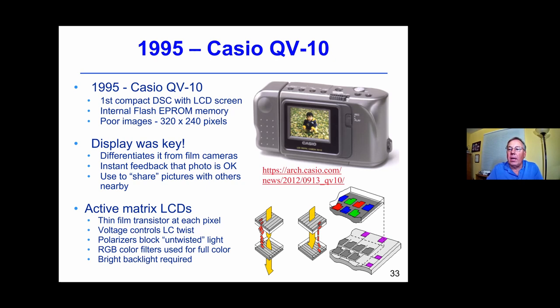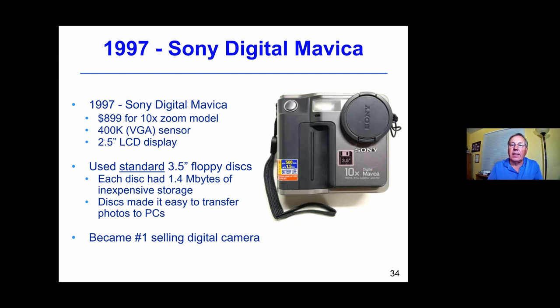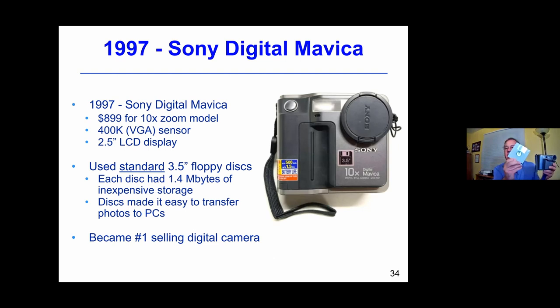The Casio had internal memory and it was very hard to get images out of the computer over the RS-232 interface. Two years later Sony came out with what they called the digital Mavica camera. It stored images on a standard floppy disk — everybody knew how to take one of these out of the camera and put it into the computer. It used standard floppy disks, which were inexpensive. The resolution was VGA — 480 by 640 — but this made it really easy to get your images into the computer, and this became the number one selling digital camera.